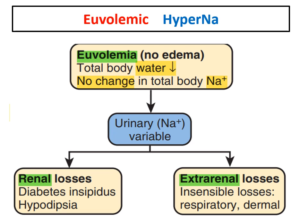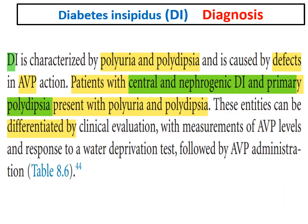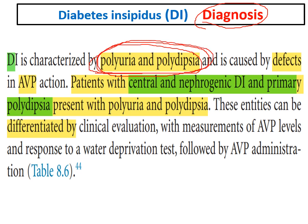Diabetes insipidus — whether central or nephrogenic — usually presents with hypernatremia, mainly due to increased water loss causing euvolemia. Keep diabetes insipidus in your differential diagnosis for any patient with hypernatremia. The main clinical presentation is polyuria and polydipsia due to the defect in AVP action.